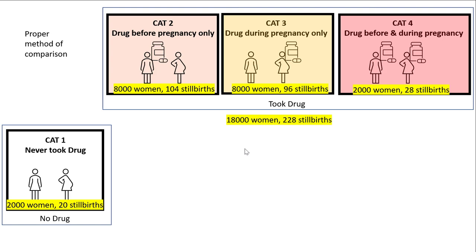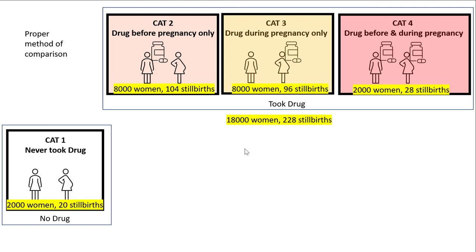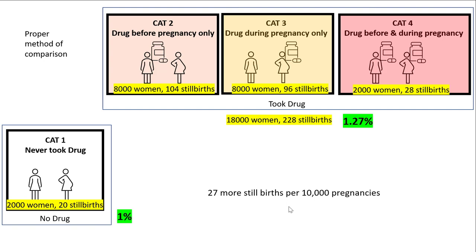The proper comparison is between those who ever took the drug versus those who never did. Adding categories two, three, and four gives 18,000 women and 228 stillbirths — a stillbirth rate of 1.27%. Those who never took the drug (category one) had a stillbirth rate of just 1.0%. The stillbirth rate for those who took the drug is significantly higher, equating to 27 more stillbirths per 10,000 pregnancies — a 27% relative risk increase or a 0.27% absolute risk increase.